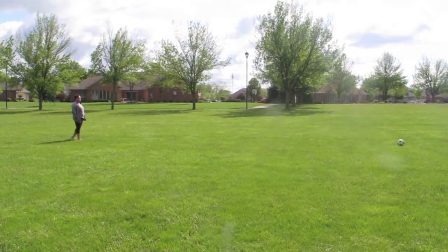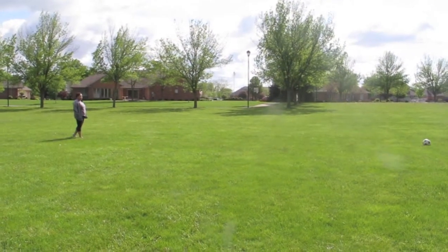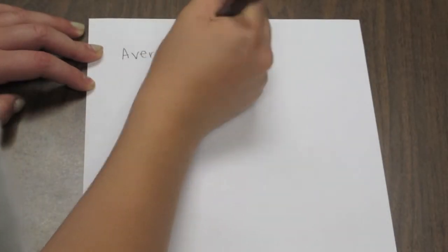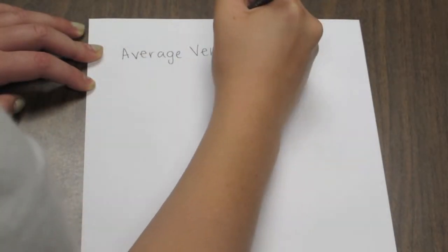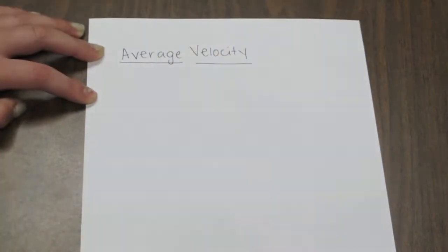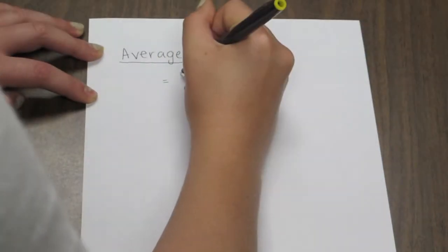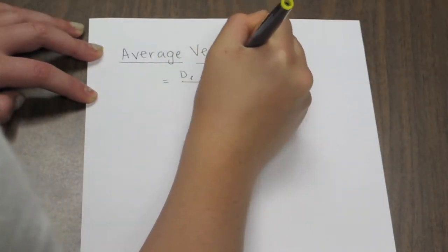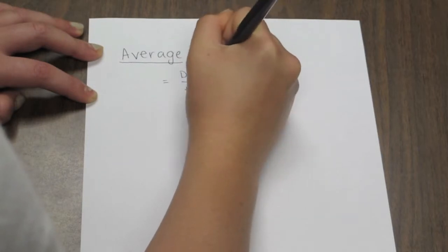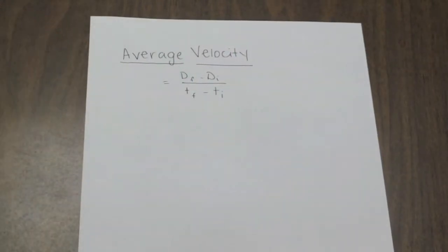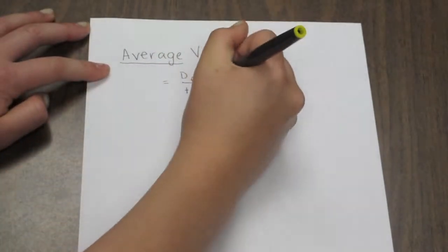Once the ball is in motion, you find the average velocity of the ball. You can find average velocity using the formula: Distance Final minus Distance Initial, over Time Final minus Time Initial.